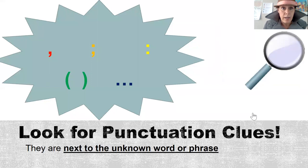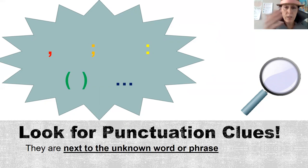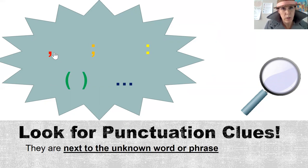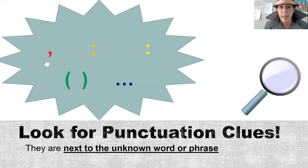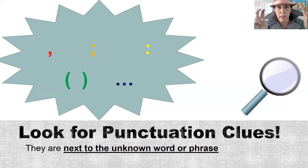You can find an appositive by looking for punctuation clues. An appositive — a word or description — will be right next to a word or phrase you don't know, usually separated by punctuation. We have to read punctuation because it tells us how to read a sentence correctly. If we see a word or phrase we don't know followed by a comma and then something else, pay close attention. That comma might be giving you more information, or it could be a semicolon, colon, parentheses, dot dot dot, or even quote marks.